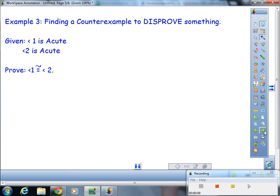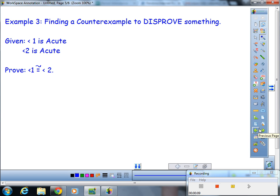And now one final example. This is actually an example of finding a counter example. So they say that given angle 1 is acute and angle 2 is acute, no picture is given so let's draw one. And then it says prove angle 1 is congruent to angle 2.